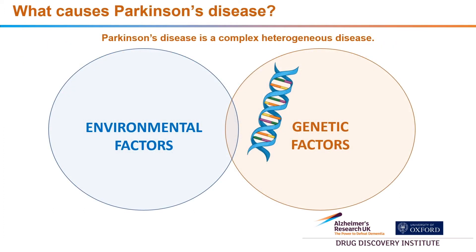So what causes Parkinson's disease? Parkinson's disease is a multifactorial disease. It has both environmental factors and genetic factors that contribute to the risk of developing it, but it is also a highly heterogeneous disease, which means that it is highly diverse. For example, one patient with Parkinson's disease might have a slightly different clinical presentation compared to another, and this is likely due to the diversity of the genetic and environmental factors that cause the disease.